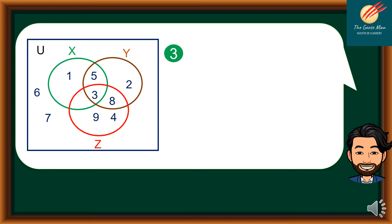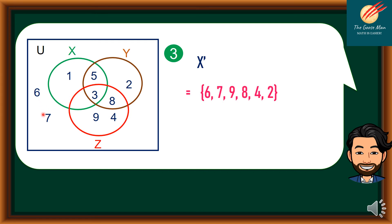Problem number 3: let's find X prime, or the complement of X. The universal set contains all elements under discussion: {6, 7, 1, 5, 3, 8, 2, 9, 4}. While X has {1, 5, 3} only. Except for elements 1, 5, 3, the complement of X is therefore {6, 7, 9, 8, 4, 2}.